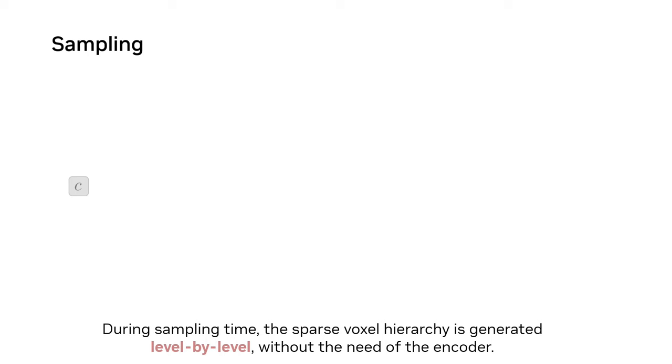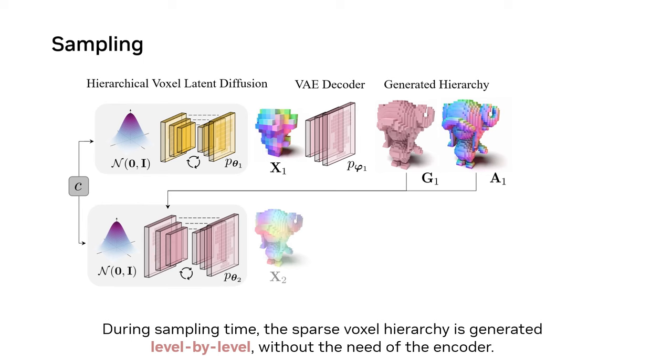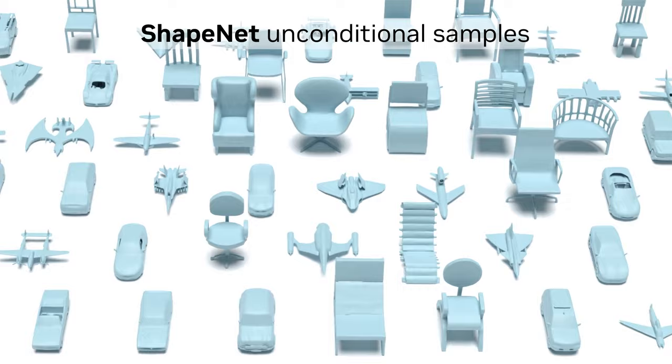During sampling, we generate a sparse voxel hierarchy level by level by running each diffusion model from coarse to finest. Our sparse voxel hierarchy representation leads to superior representation power than baseline approaches.